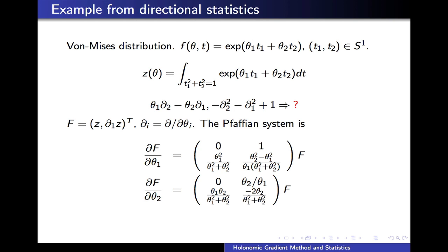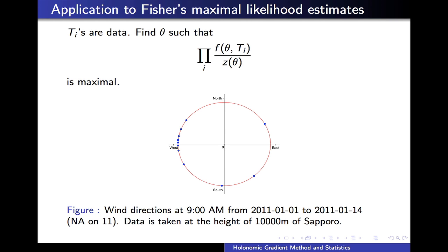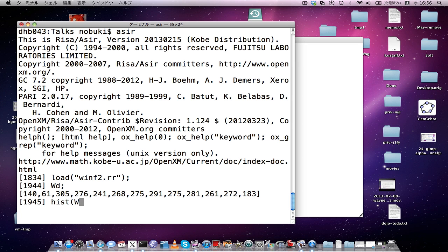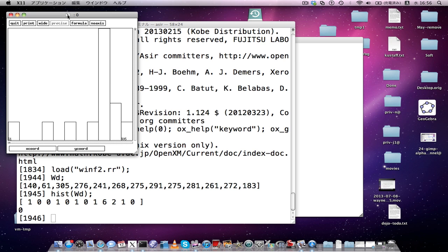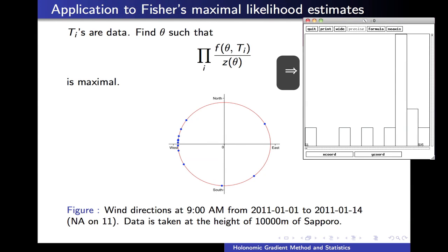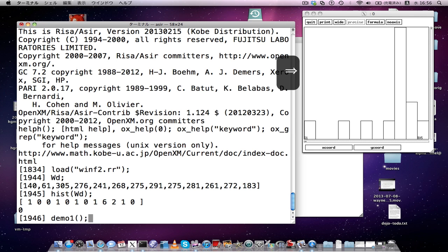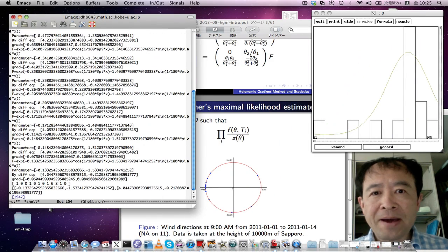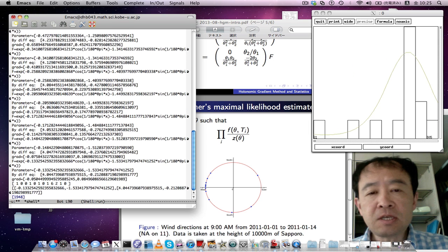Let us use these values for Fisher's maximum likelihood estimate. The maximum likelihood estimate is to find a parameter vector theta such that this probability is maximized. Let us perform the maximum likelihood estimate for this wind direction data — it is a kind of curve-fitting problem for this histogram. The horizontal axis is the direction in degrees, and the vertical axis is the frequency. We want to find a parameter vector for the von Mises distribution which fits this histogram. We use gradient descent to find the maximum of this likelihood function. You can see that curves approach the best-fitting curve step by step.